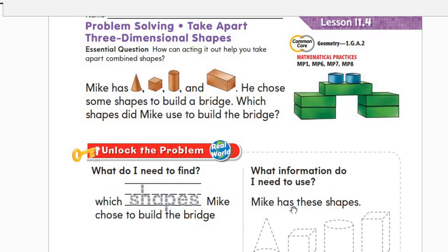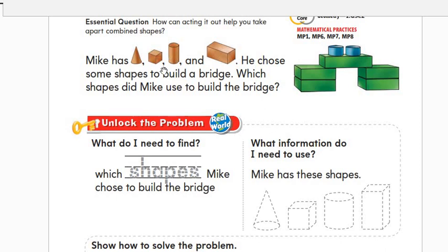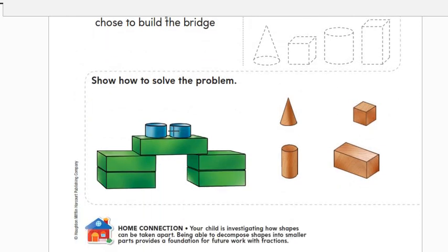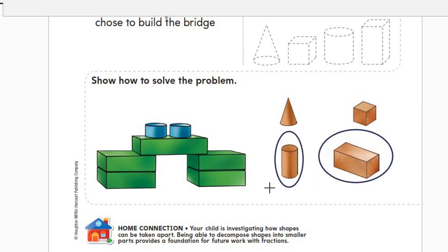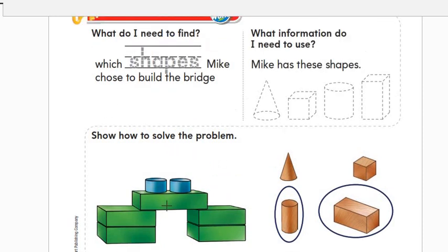Mick has these shapes: cone, cube, and three cylinders, and a rectangular prism. This is the bridge Mick wants to build. Which shapes did Mick choose? Yes — cylinder, cylinder, and rectangular prism. How many cylinders? Two cylinders. And how many rectangular prisms? One, two, three, four, five — five rectangular prisms and two cylinders. Mick chose these to build the bridge.